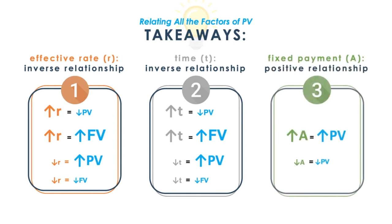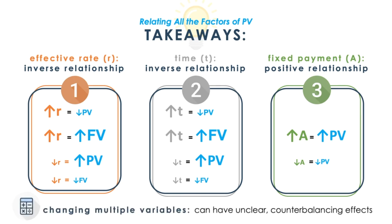3. There is a positive relationship between A, the fixed payment amount, and PV, such that the bigger the payments you make, the greater the present value of those cash flows are today. Intuitively, this is because a stream of cash flows with larger fixed payments will be more valuable today than a stream of cash flows with smaller fixed payments. We also learned that changing multiple variables can have counterbalancing effects, so it is difficult to determine the present or future value calculated. I hope that through this video, you were able to gain some intuition around the factors surrounding present value.